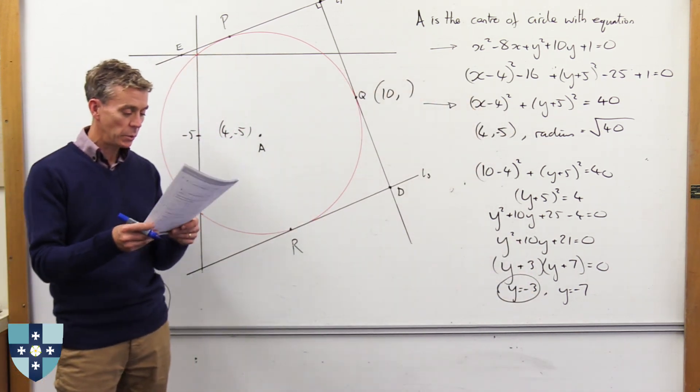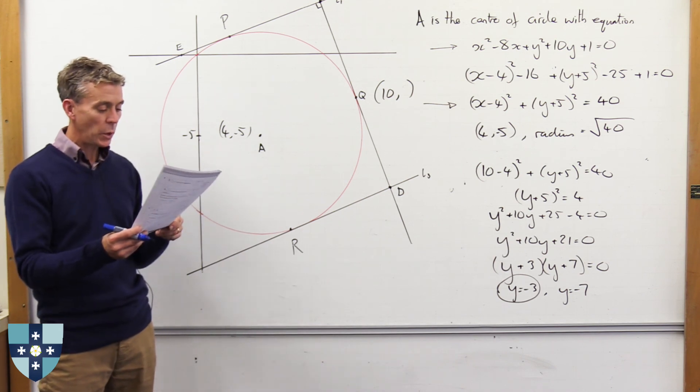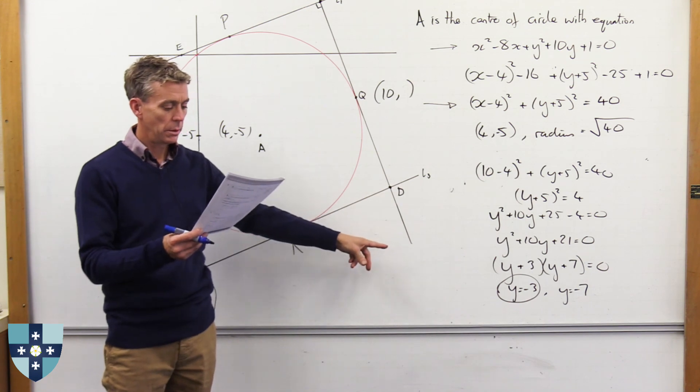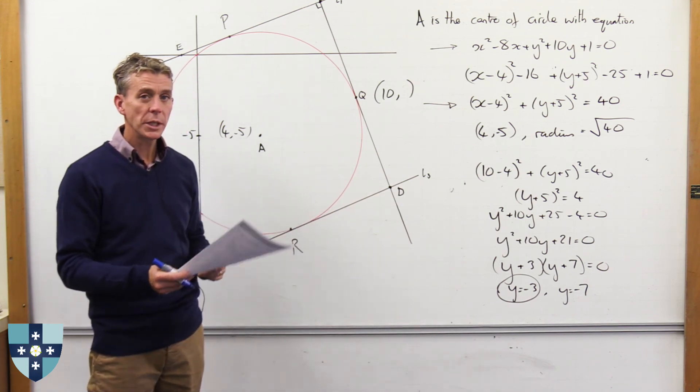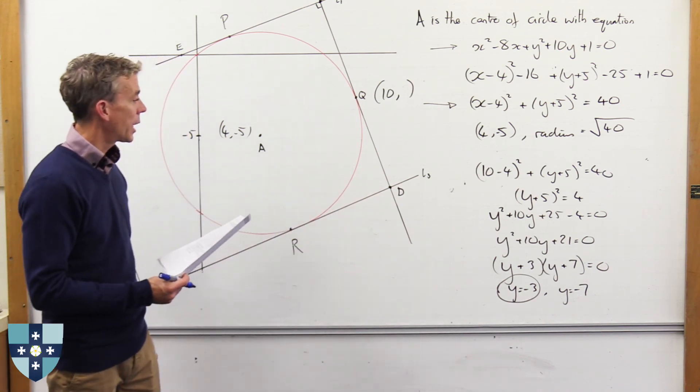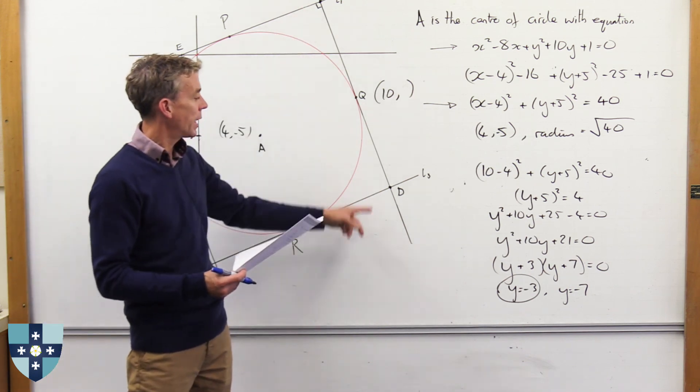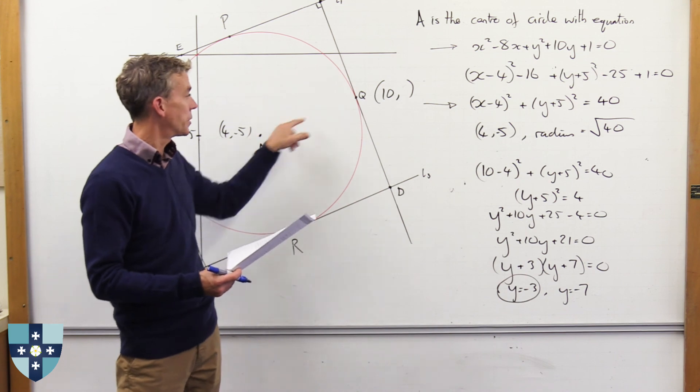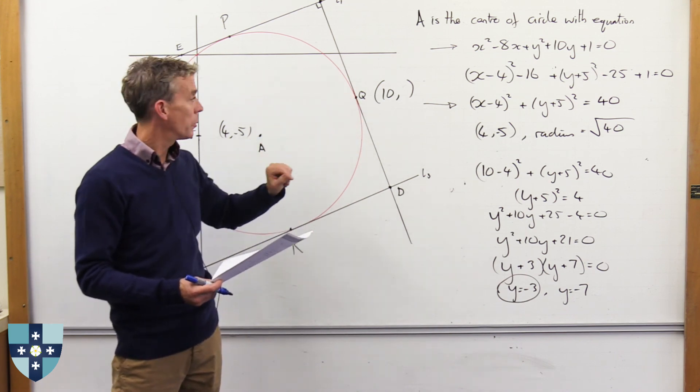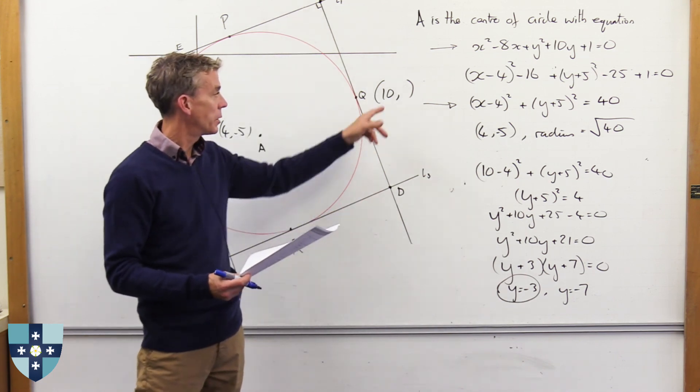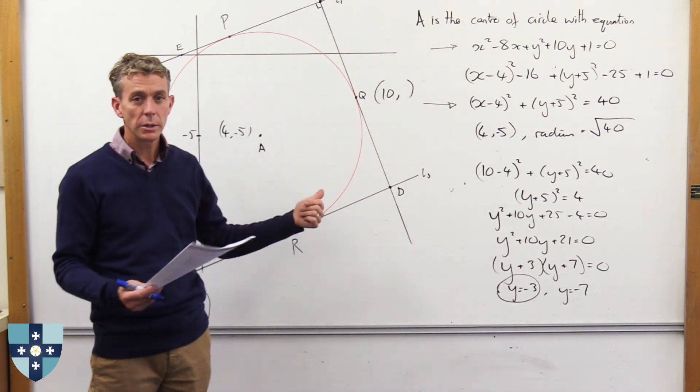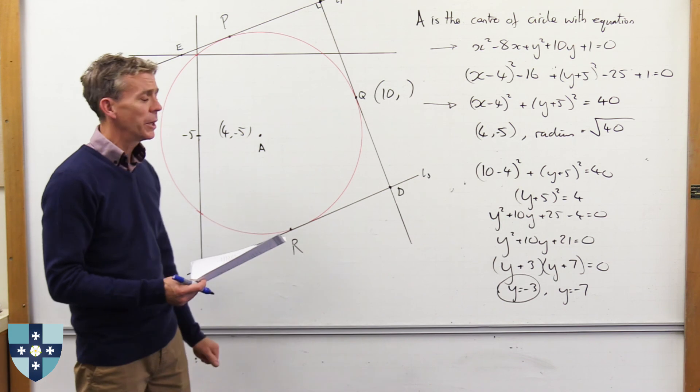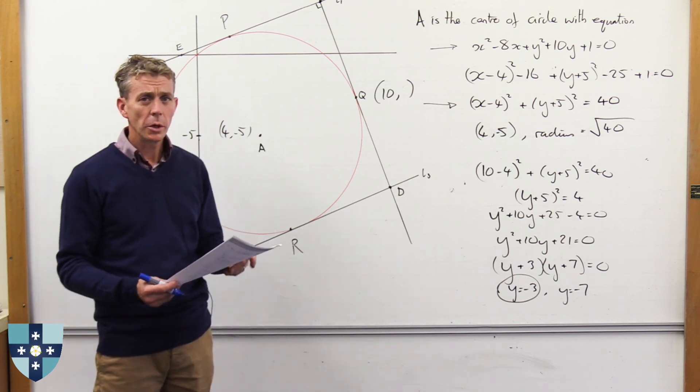If you're wanting to know what the other questions were, the next one would have been, find the equation of L2, that's this line, giving your answer in the form y equals mx plus b. And the way you could do that would be to think about the fact that it's at right angles to one of these lines. You also would be able to work out the equation of this line because you've got these two points now. And so you'd be able to work out the gradient, find that gradient, use this point in that equation, you'll be there. Hope that was interesting. If that's the sort of thing you think, I want to be able to do more of those, then come and join us. Thank you.